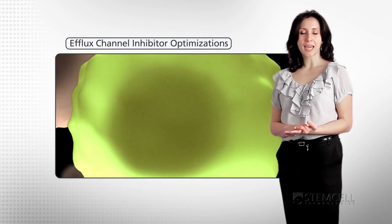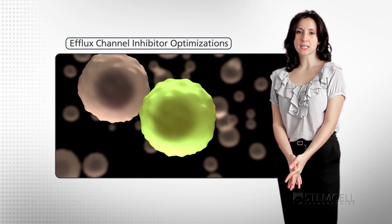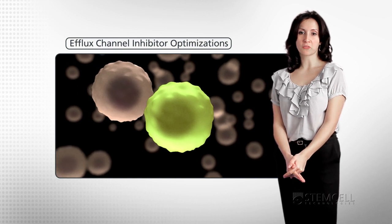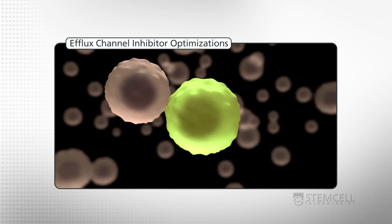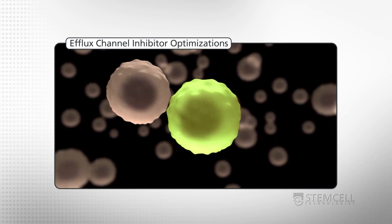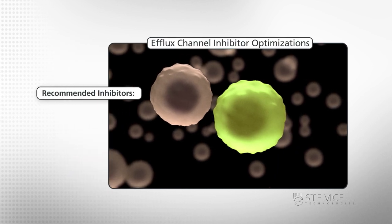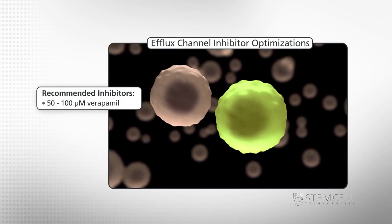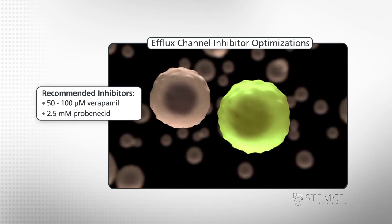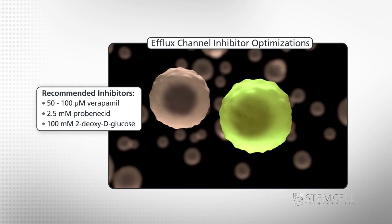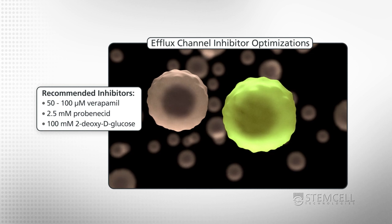To prevent efflux of the activated ALDEFLOR reagent and the reaction product, ALDEFLOR buffer contains efflux inhibitors that inhibit the activity of ABC transporters expressed in hematopoietic stem and progenitor cells. As different cell types may express different ABC transporters, it may be necessary to test various inhibitors. Recommended inhibitors include 50 to 100 micromolar verapamil, 2.5 millimolar probenecid, or 100 millimolar 2-deoxyglucose. ABC transporters are also inhibited by low temperatures.